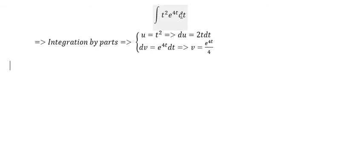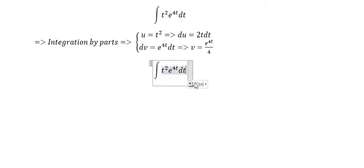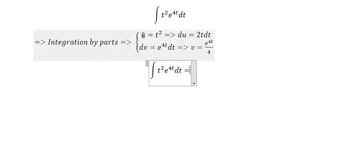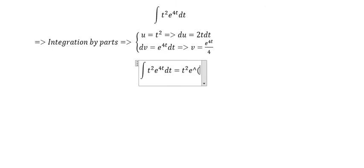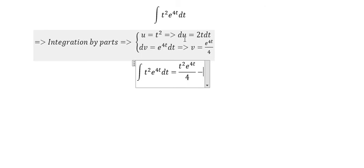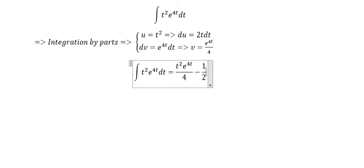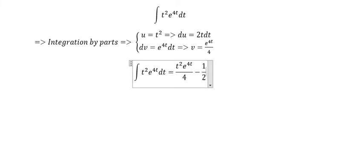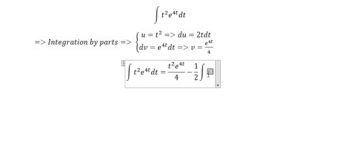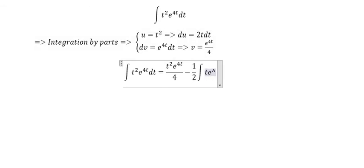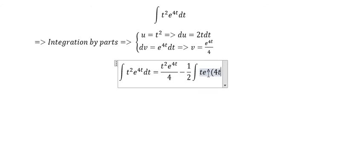And now we will apply the integration by parts formula. We have u multiplied with v, which gives t squared times e to the power 4t divided by 4, minus the integral of v multiplied with du. We have 2 and 4 multiply together, and we can simplify that to 1 over 2, times the integral of t multiplied with e to the power 4t dt.